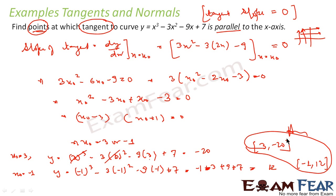So what I did: I was told the slope of tangent is zero, I wrote the formula for slope of tangent, equated it to zero, found x₀ = 3 and x₀ = −1, then found the y-values in both cases, getting the points (3, −20) and (−1, 12).